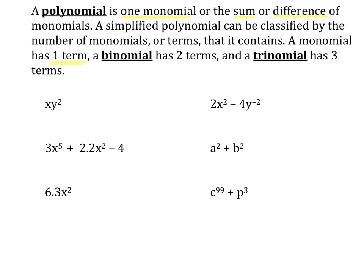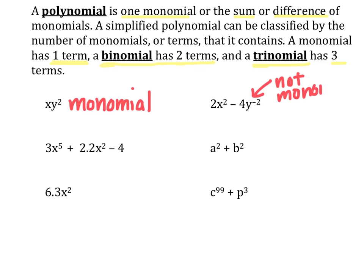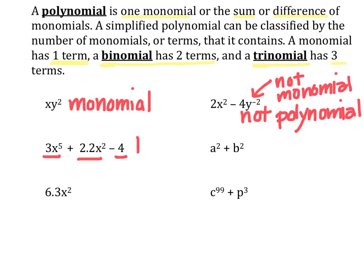A monomial has one term. A binomial has two terms — bi for 2. And a trinomial has three terms — tri for 3. So if we were to identify x y squared, we would say it's a monomial because it's one term. 2x squared minus 4y to the negative 2 is not a polynomial because 4y to the negative 2 is not a monomial — the exponent is negative. Since that's not a monomial, this is not a polynomial. Whereas 3x to the fifth plus 2.2x squared minus 4 is the sum of three monomials, so we would call that a trinomial.